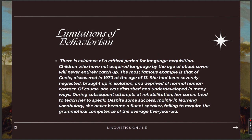There is evidence of a critical period for language acquisition. Children who have not acquired language by the age of about seven will never entirely catch up. The most famous example is that of Genie, discovered in the 1970s at the age of 13. She had been severely neglected, brought up in isolation, and deprived of normal human contact. She was disturbed and underdeveloped in many ways. During subsequent attempts at rehabilitation, her carers tried to teach her to speak. Despite some success — mainly in learning vocabulary — she never became a fluent speaker, failing to acquire the grammatical competence of the average five-year-old.